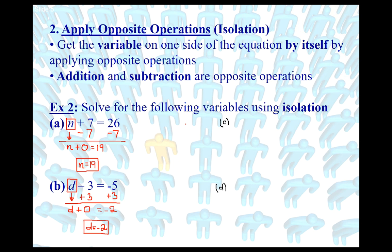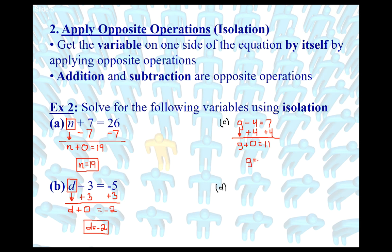Let's do a couple more. C: G minus 4 equals 7. Why is G not isolated? Because there's a subtraction of 4. Apply the opposite operation — the opposite of subtraction is addition. So add 4 to both sides, because negative 4 plus 4 is zero. Whatever you do to one side you must do to the other. Carrying down: G plus zero equals 7 plus 4, which is 11. So G equals 11.